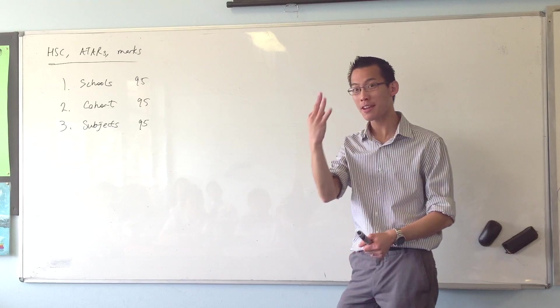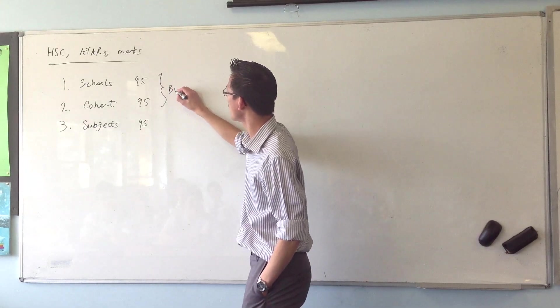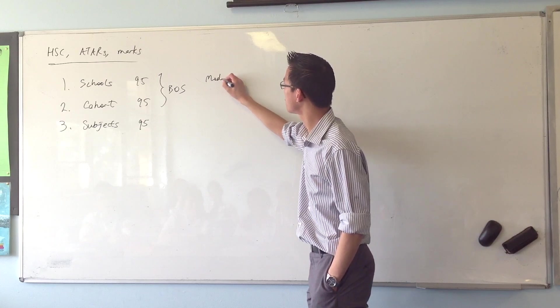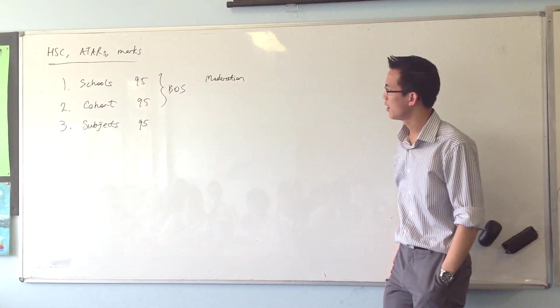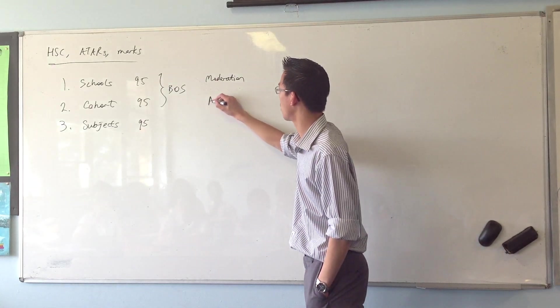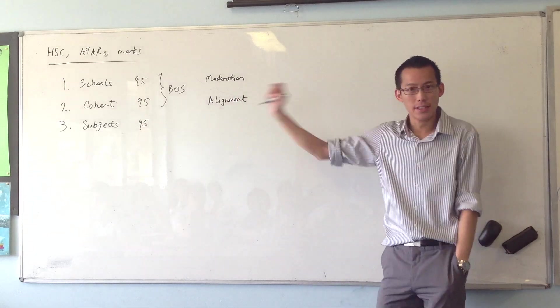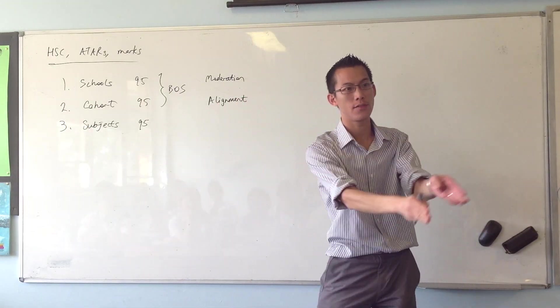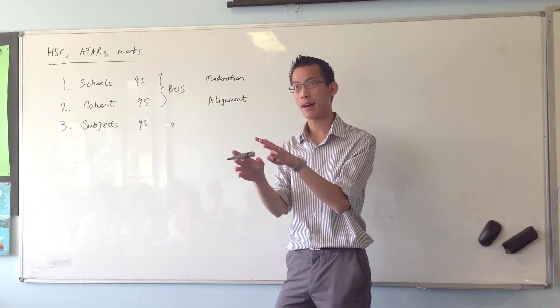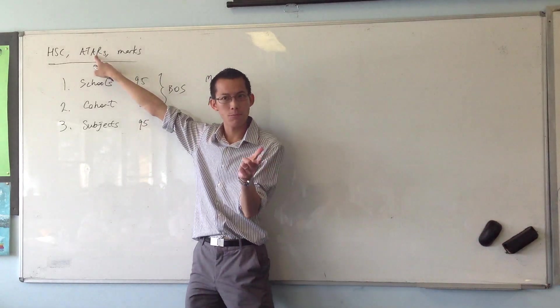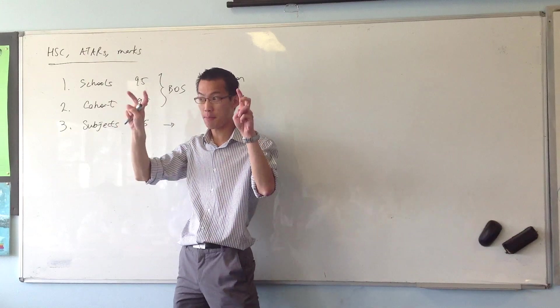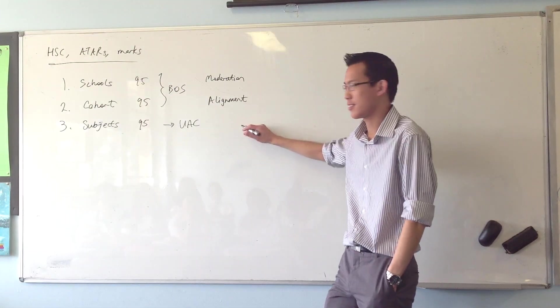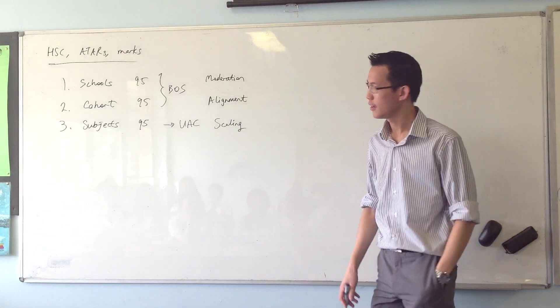So how did they deal with this problem? They do three things for three problems. For the first two, they're dealt with by the Board of Studies. They've got two processes. The first one, to deal with the difference between schools, they call it moderation. So they moderate the marks, that's what they call it. And to deal with the differences between years, the cohorts, they have a process that's called alignment. The last problem, the problems of comparing subjects, that's not dealt with by the Board of Studies because all they're interested in is getting the marks right for every individual subject. This problem, because it's really a problem about considering multiple subjects together and coming up with, before an ATAR, you get something called an aggregate. So do you guys know about that? So that's 500 marks, it's your 10 best units. So this is dealt with what most people think of as the process, they call this scaling.